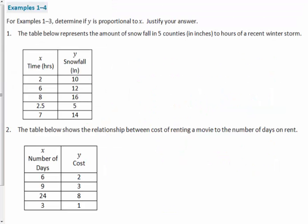On the next page, for examples 1 through 3, determine if Y is proportional to X. Y is second in the table here. In this first example it's snowfall. X is on the left side, it's first in the table. Justify your answer. The table below represents the amount of snowfall in 5 counties in inches to hours in a recent winter storm. I'm betting that snow is not proportional to where you live in the counties.